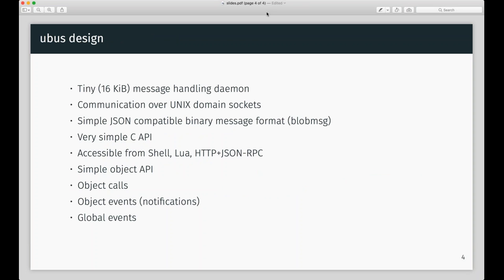When I started designing U-Bus, it obviously needed to be tiny. Even with features added over time like ACL support and different ways of sending messages, the main daemon that handles all the messaging still comes out at 16 kilobytes uncompressed. It's very small, very easy to review, and there really isn't much worth taking away. That goes a long way in making it accessible because people can start reading the source code and find it's just not all that scary and big as many other implementations.